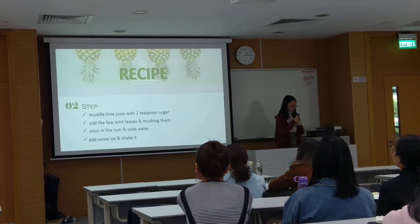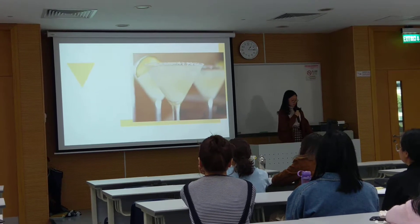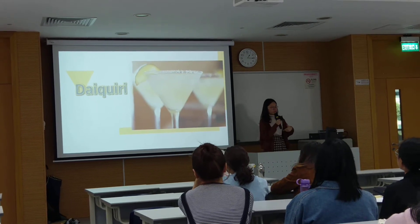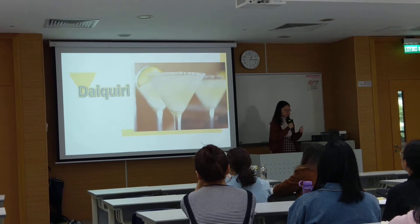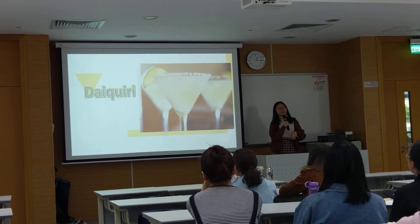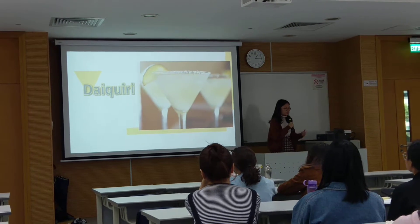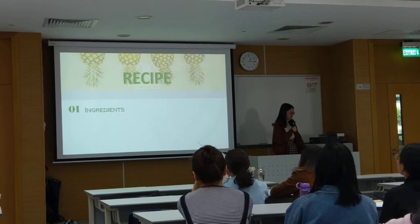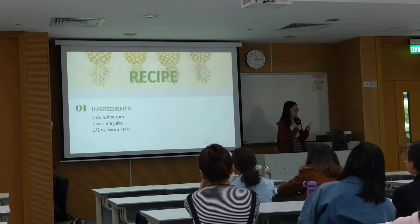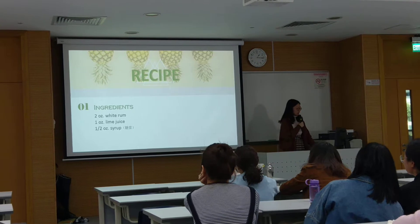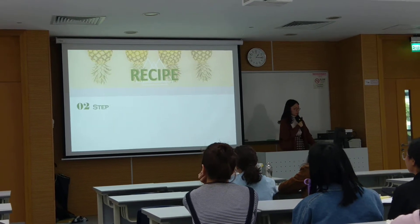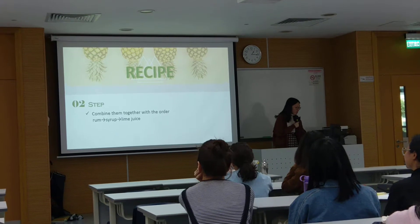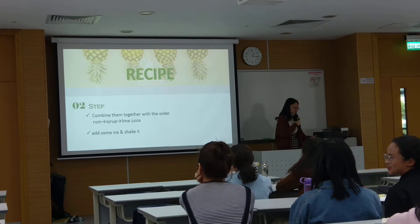After introducing the mojito, I'm going to show you the next one: the daiquiri. The daiquiri is one of the six famous drinks in the book The Fine Art of Mixing Drinks. Because of the limitation of time, I'm not going to make this one right now, but if you want to taste it, I can show you after this presentation. To make a daiquiri, you need two ounces of rum, one ounce of lime juice, and half an ounce of syrup. The steps are really easy — just combine the rum, syrup, and lime juice together, add ice, and shake it. Then it's done.